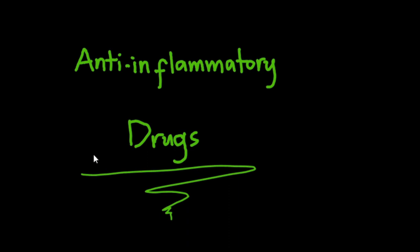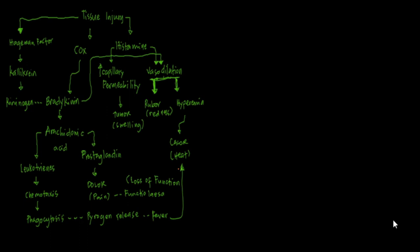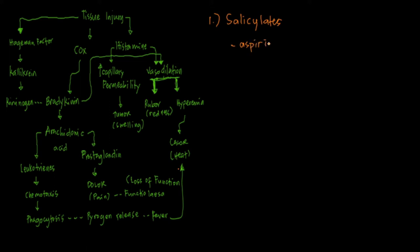Moving forward about anti-inflammatory drugs, there are many drugs used as anti-inflammatory agents. The first example, which can be broadly classified, are your salicylates. Salicylates are also one of the oldest anti-inflammatory agents used, and one common example is aspirin. You also have balsalazide.